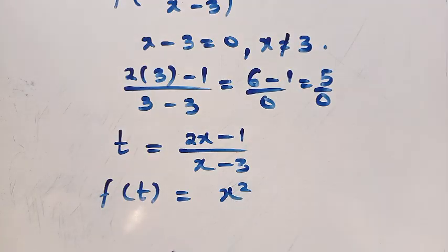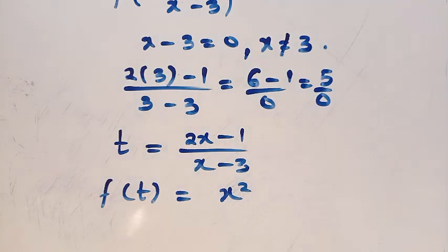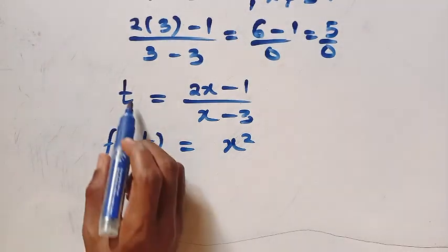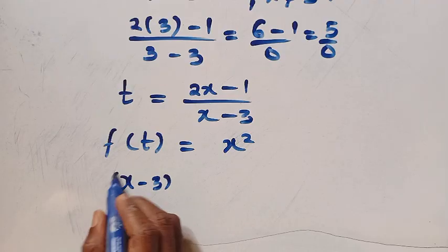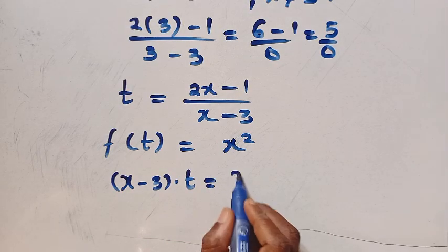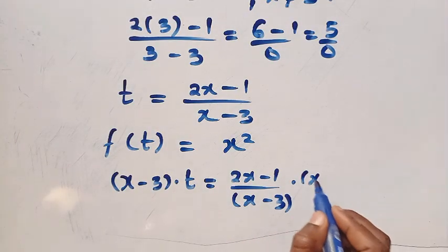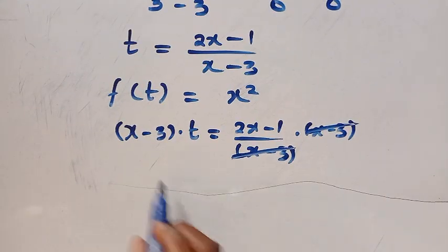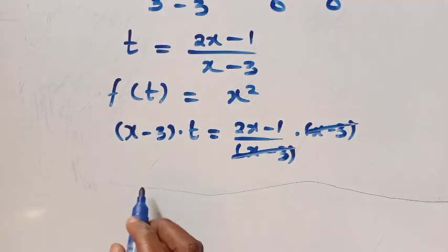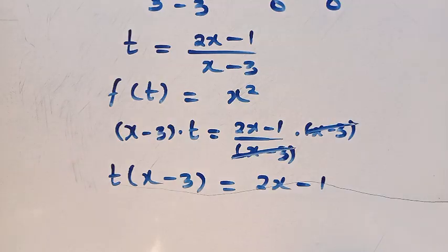Now let's find the value of x from where we let t equal (2x minus 1) divided by (x minus 3). To do that, the first thing is we multiply both sides of this equation by (x minus 3). Then we have (x minus 3) times t equals 2x minus 1 over (x minus 3), then multiply by (x minus 3). We can see that (x minus 3) cancels, giving us t(x minus 3) equals 2x minus 1.